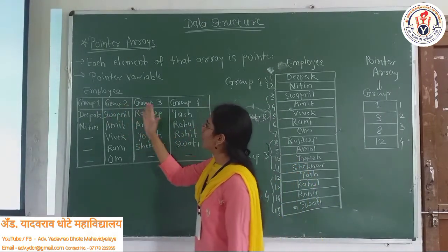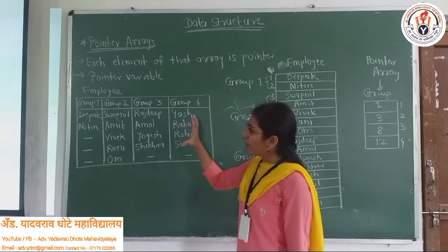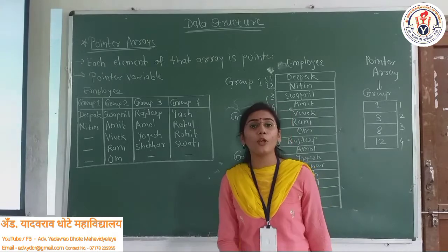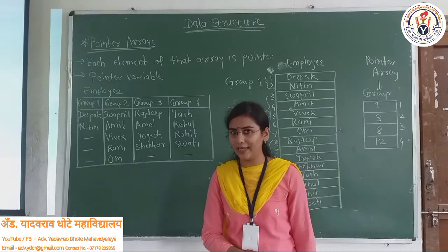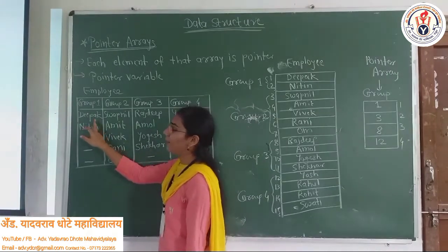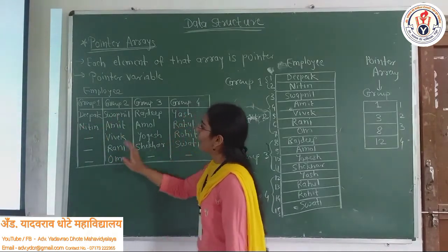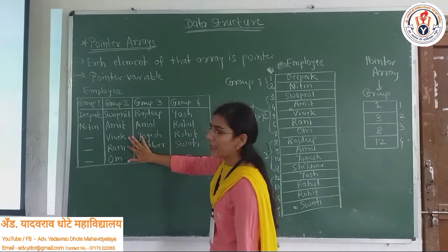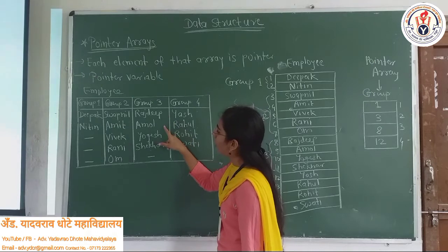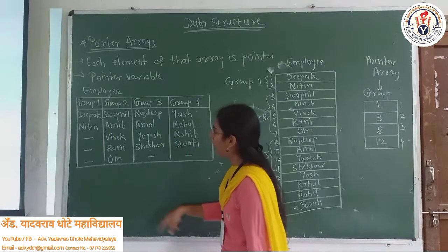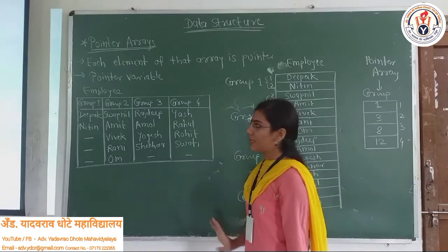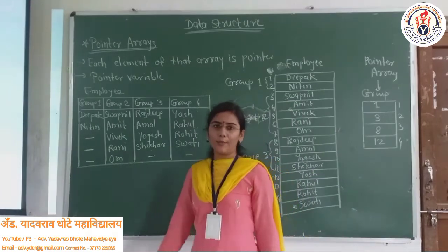So Group 1, Group 2, Group 3, Group 4. Group 1 has Swapnil, Amit, Vivek, Rani. Group 3 is Rajdin, Amol, Yogesh, Shekhar. And Group 4 is Yash, Rahul, Rohit and Swati. Now this is our employee table.